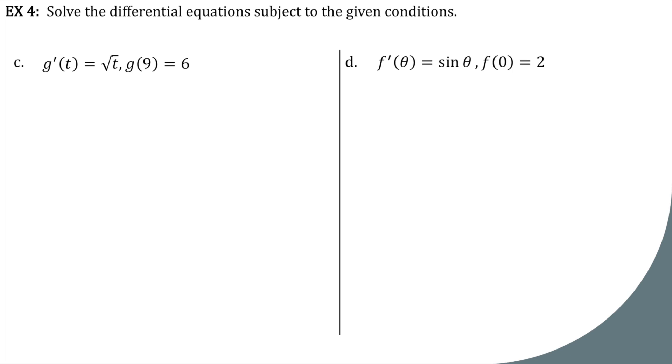g'(t) equals the square root of t. Okay, I don't like those radicals. So I'm going to rewrite that as a fractional exponent. Add one, divide by it. That's just the general power rule. 2 thirds t to the 3 halves plus c. And then plug in my condition. 6 = 2/3 times 9 to the 3 halves plus c. Can you do 9 to the 3 halves in your head? I like to look at the bottom number first. So that's 9 to the 1 half. That's the square root of 9 is 3, cubed is 27. 2 thirds of that is 18. So 6 equals 18 plus c. So c is negative 12. And there we have our function.